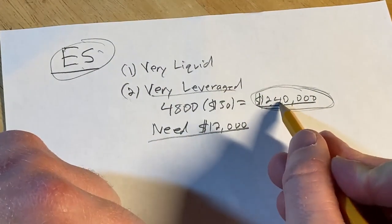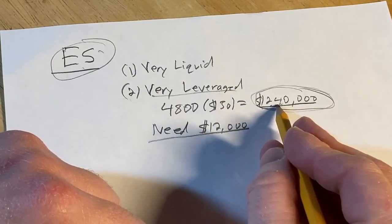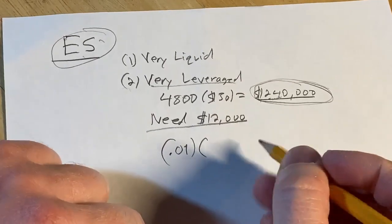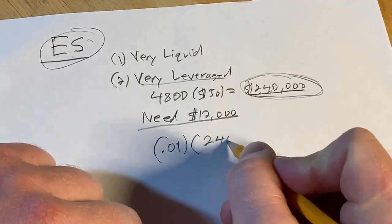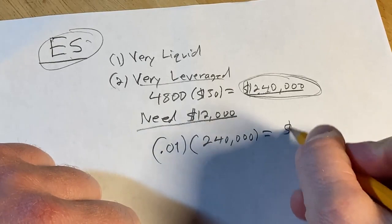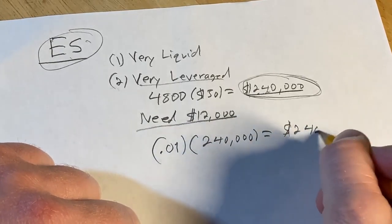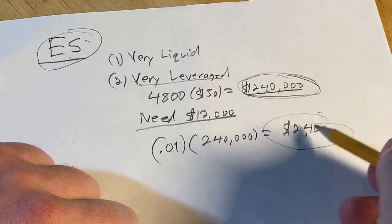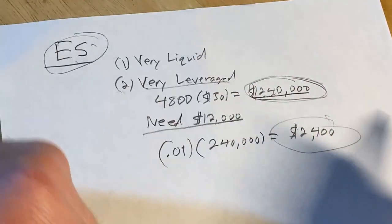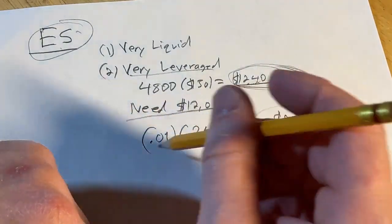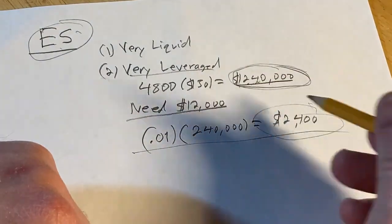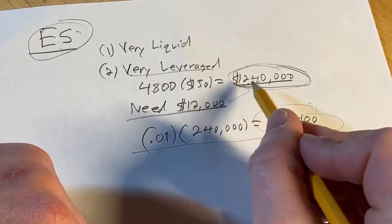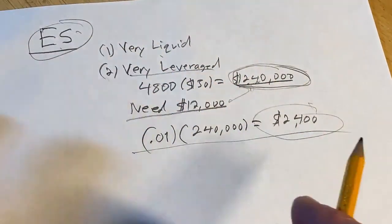So 1% of this is $2,400. So if you do 1% of $240,000, that's $2,400. So if you buy one contract and it goes up 1%, in theory, you should make roughly $2,400. So that's pretty cool. And that 1% on 12,000 is a much smaller number. So you see, it's very leveraged and that's why it's so popular.